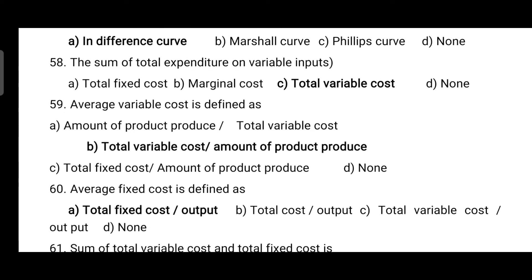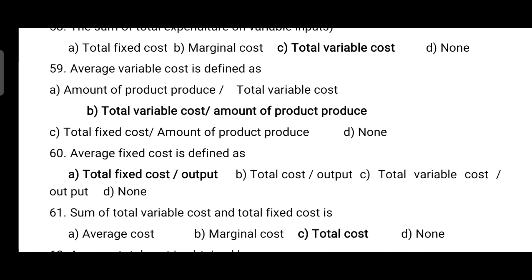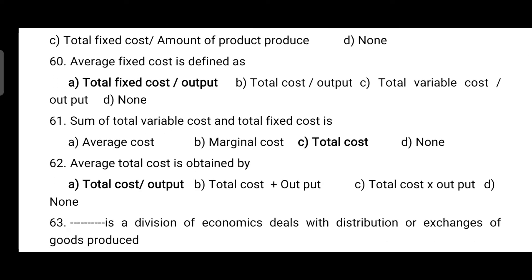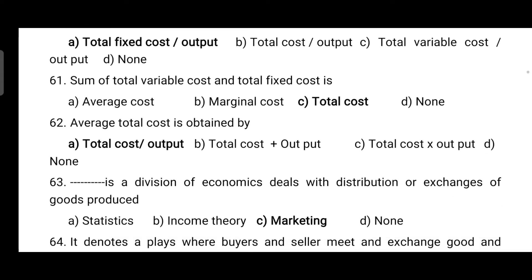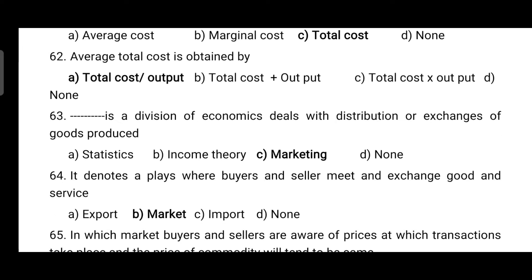The sum of total expenditure on variable inputs is known as total variable cost. Average total variable cost is defined as total variable cost divided by the amount of product produced. Average fixed cost is defined as total fixed cost divided by output. The sum of total variable cost and total fixed cost is known as total cost.